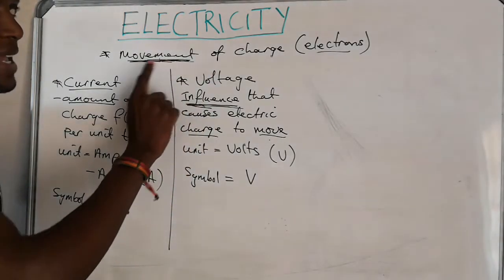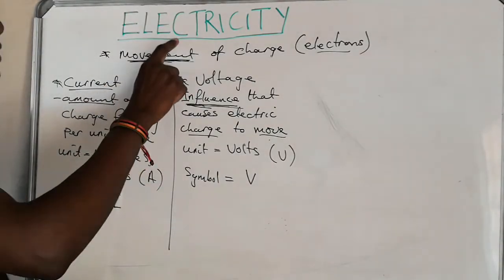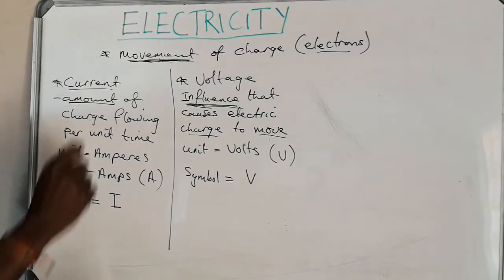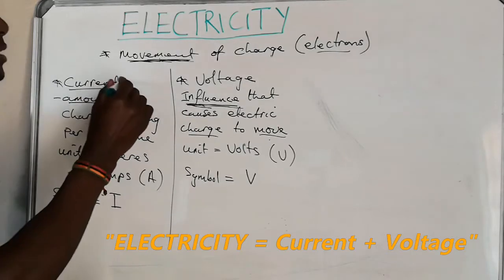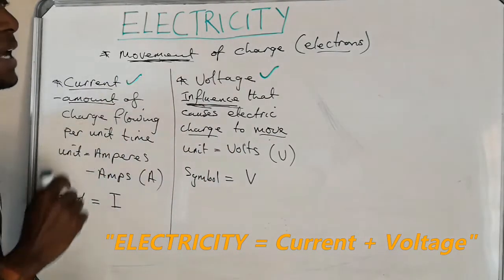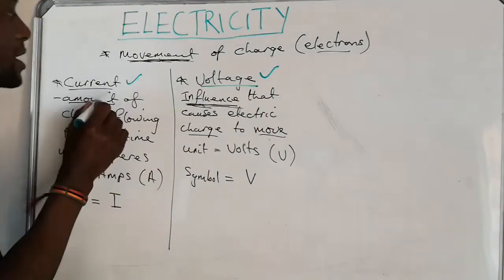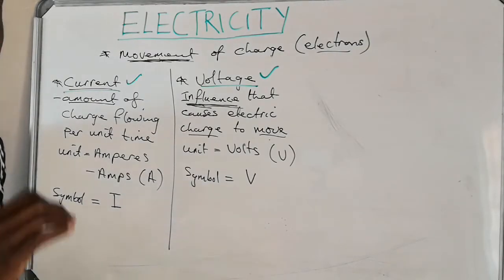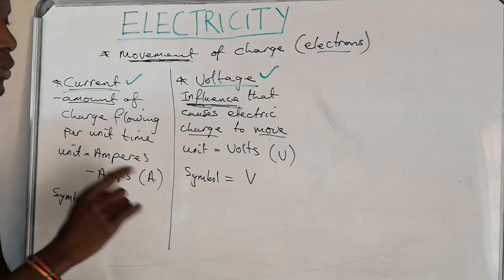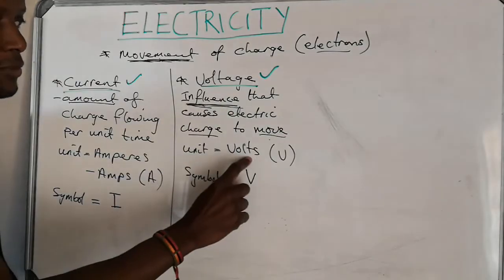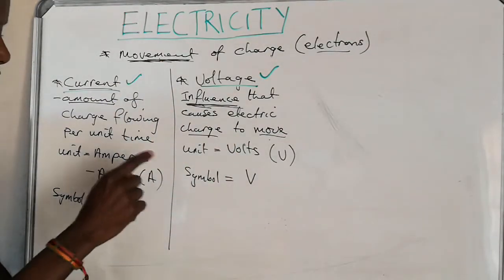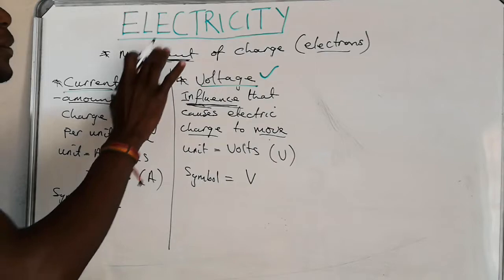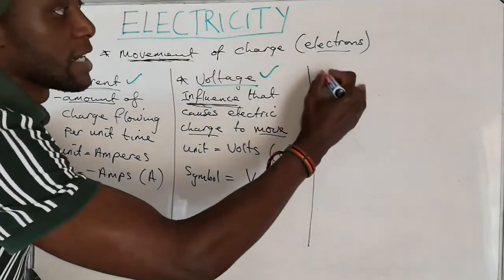Keep in mind that with electricity, voltage and current cannot be separated. As long as we have electricity, then we should have voltage and we should have current. The influence that is causing this movement, and at the same time how much charge is flowing per unit time — these two cannot be separated. The unit for voltage is volts, and the unit for current is amps or amperes.